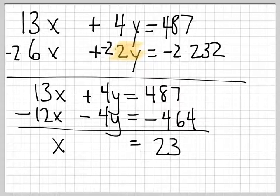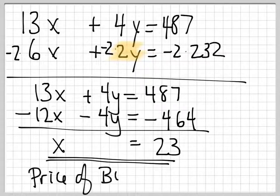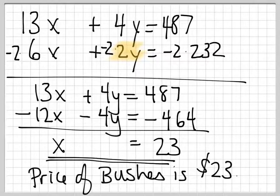And so the price of bushes is $23. And we're not done because we haven't figured out the price of trees. But all we have to do is plug this into one of our original equations and we will get the price of trees.